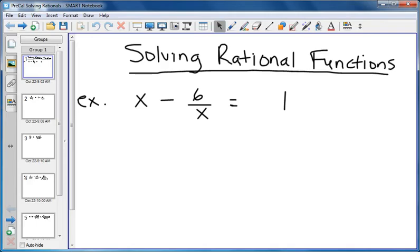So in this example, or pretty much with all of them, we want to get rid of the denominators. The denominators cause trouble, they make things harder, so let's get rid of them. And we need to multiply by the common denominator. Well this one, there's only one denominator, so that's pretty simple to see, that the common denominator is x.